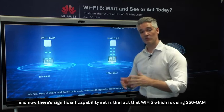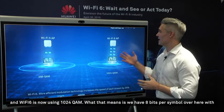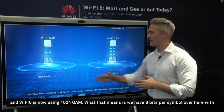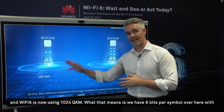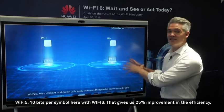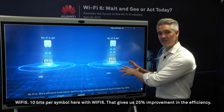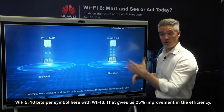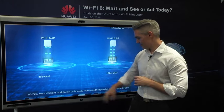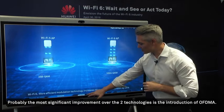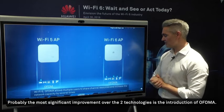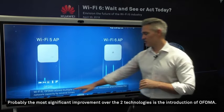Another significant capability is that Wi-Fi 5 was using 256 QAM and Wi-Fi 6 is now using 1024 QAM. That means we have 8 bits per symbol with Wi-Fi 5 and 10 bits per symbol with Wi-Fi 6, which gives us a 25% improvement in efficiency.